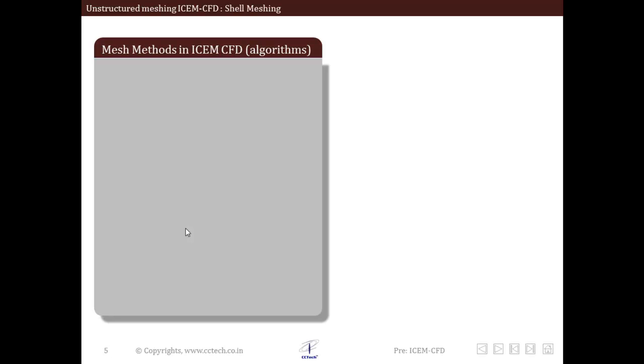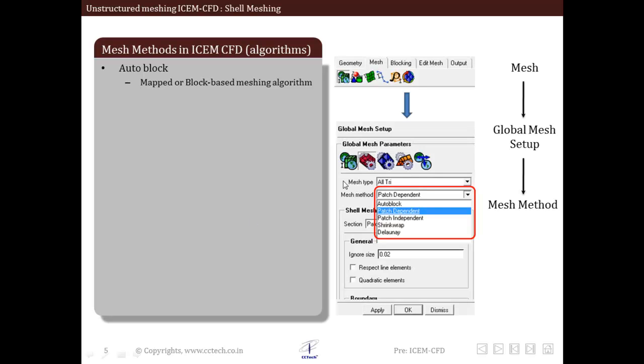Now we will see meshing methods or algorithms available in ICEM CFD. Whenever a mesh is created, some algorithm or program runs behind the scenes. Different types of algorithms are categorized by different names. We can see different algorithms by going to mesh, then global mesh setup, then mesh method. When we click on shell mesh, we see different mesh methods in this dialog box.